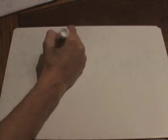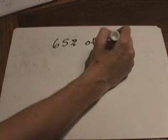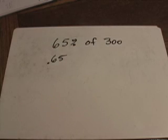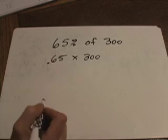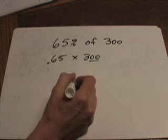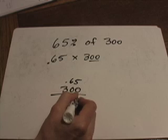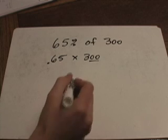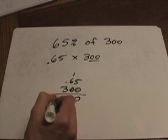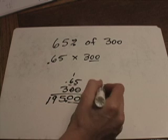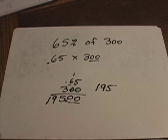Let's try one that gets a little bit harder. What if we want to find 65 percent of 300? Well, 65 percent is the same thing as 0.65, and we're going to multiply that times 300. Because of the zeros on the end, I'd rather put 300 on the bottom and 0.65 on top. We know the answer will end with two zeros, so I put those down and multiply the rest: five times three is fifteen, carry the one, six times three is eighteen plus one is nineteen. Two numbers past the decimal point in the problem means two numbers past the decimal point in the answer, so the answer is 195. Sixty-five percent of 300 is 195.